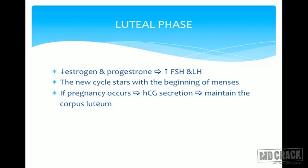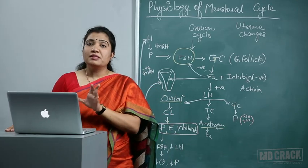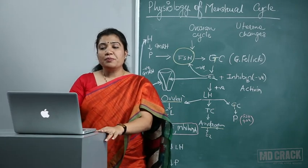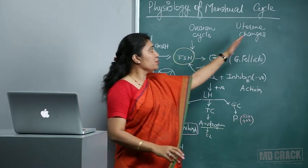If pregnancy occurs, the trophoblastic tissue releases hCG, which maintains the corpus luteum and prevents degeneration. The corpus luteum keeps secreting progesterone and some estrogen, so there is no withdrawal of steroid hormones, maintaining the pregnancy. There is no menstruation in case of pregnancy.